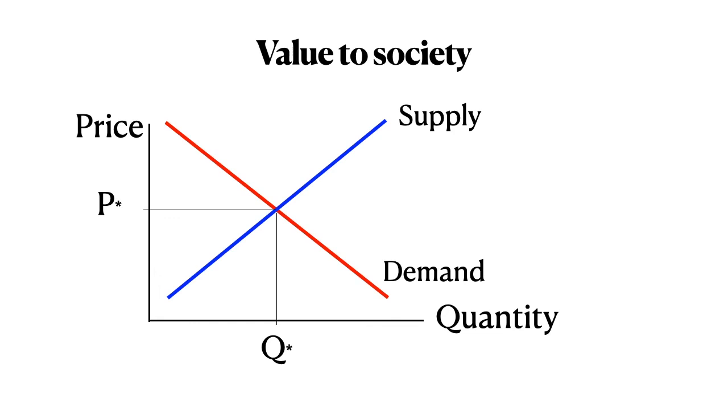And we'll use exactly the same definitions as we had before. Consumer surplus is the area beneath the demand curve and above the price line. Producer surplus is the area below the price line but above the supply curve. So if we put in those two shaded areas, we can see our consumer surplus and our producer surplus are at the maximum level.